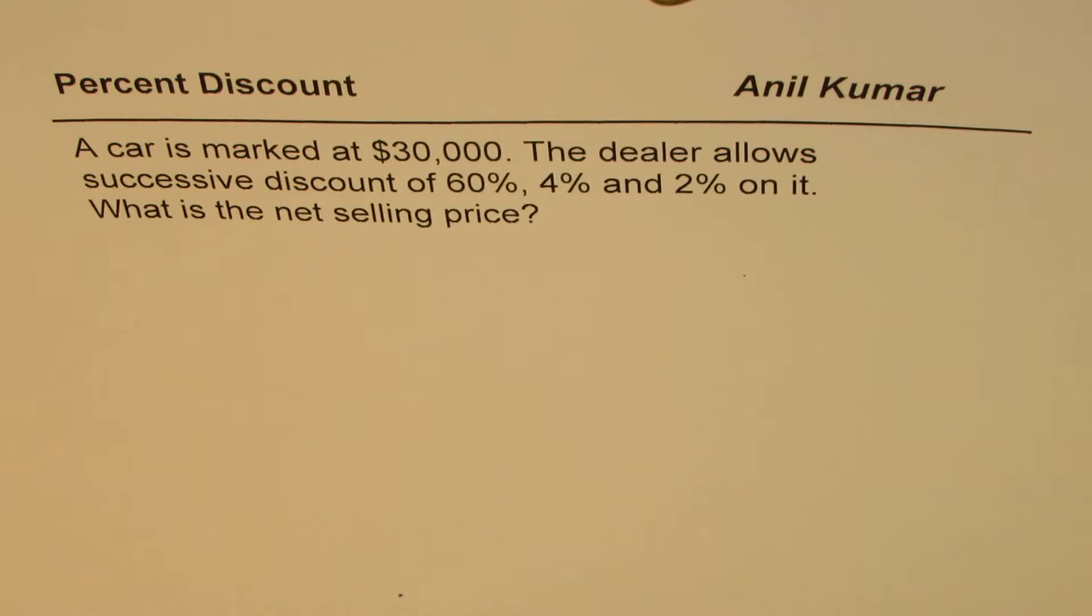I'm Anil Kumar sharing with you an excellent question from my subscriber. Let me first thank him for giving me an opportunity to solve this question. The question here is: a car is marked at thirty thousand dollars. The dealer allows successive discount of sixty percent, four percent, and two percent on it. What is the net selling price?